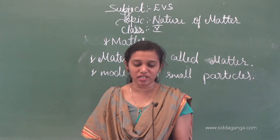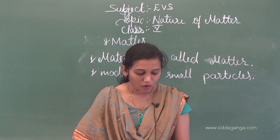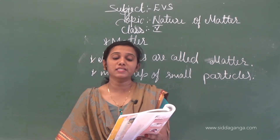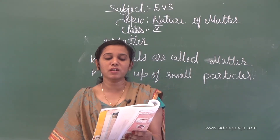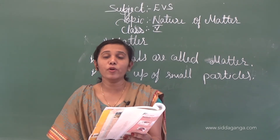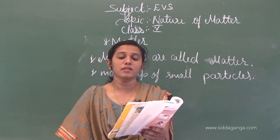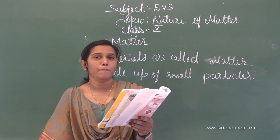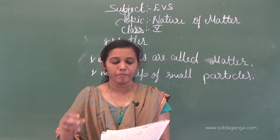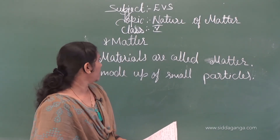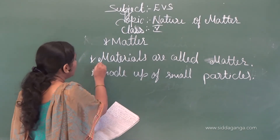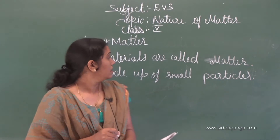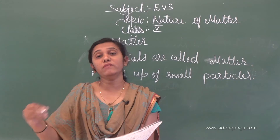What do you mean by matter, children? Page number 133, we have one question. Particles present in matter are invisible. Matter is made up of very minute particles. Visible matter consists of invisible particles. The answer is: scientifically, materials are called matter. Visible matter is made up of invisible particles.